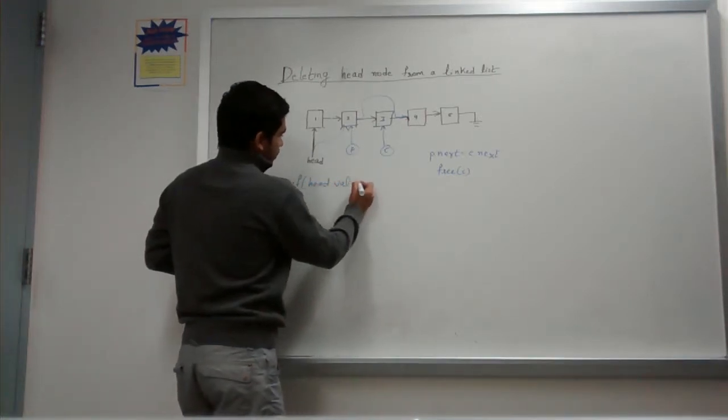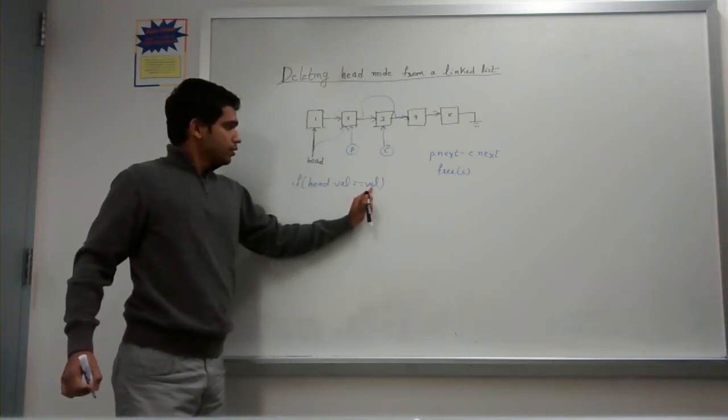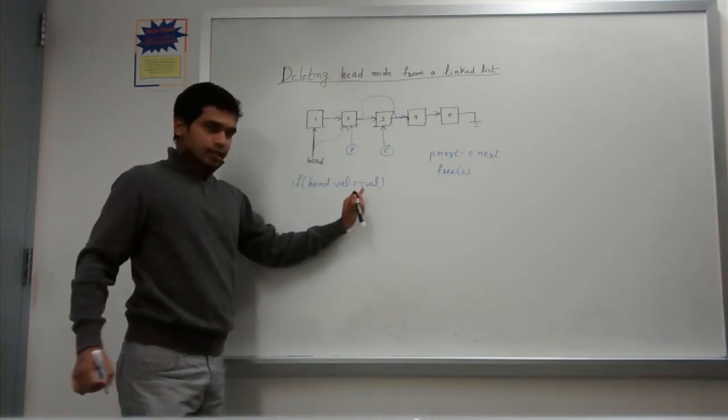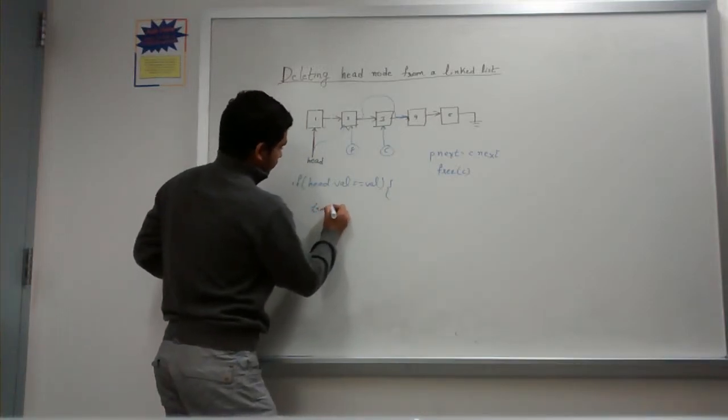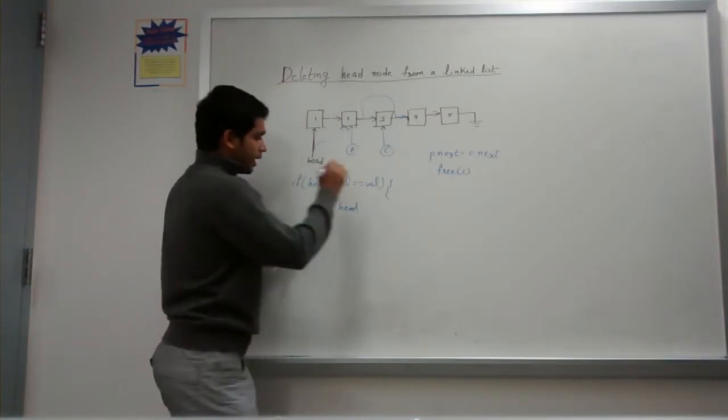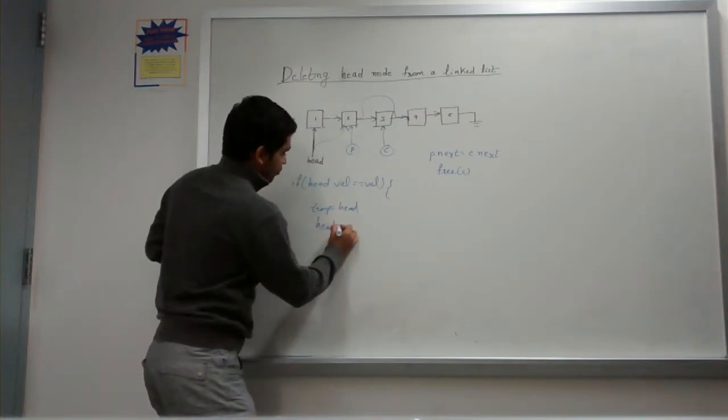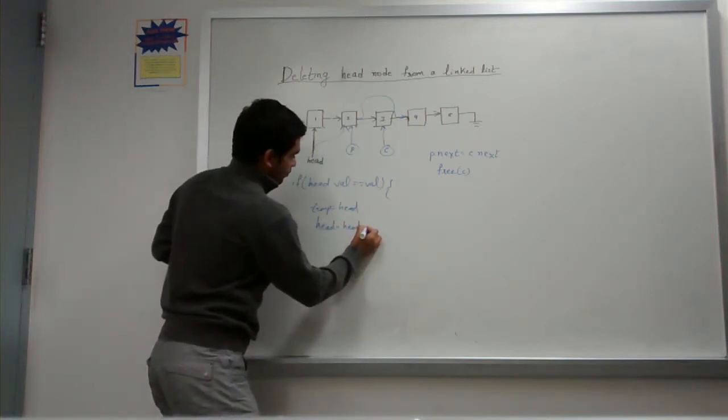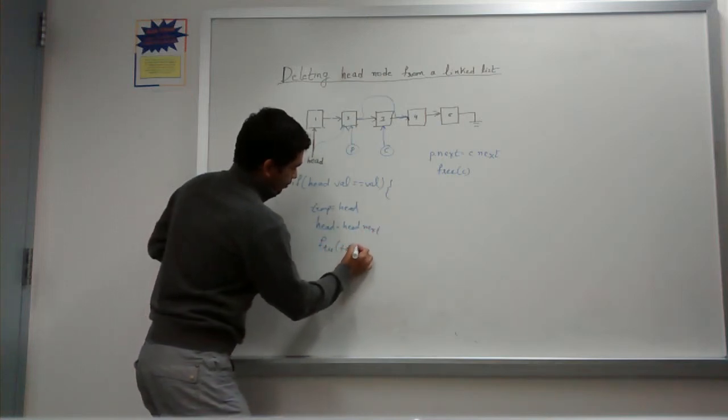So if I realize that head is the one which equals the value I want to delete, that means I want to delete head. I assign head to a temporary variable and move head to head.next which is 2. And then you can go and free temp.